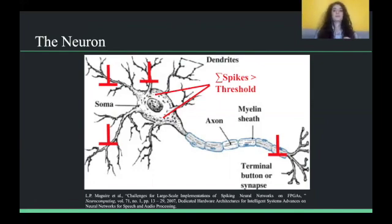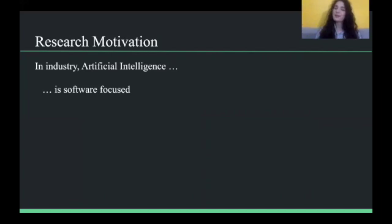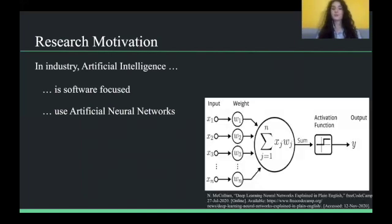So now that we've covered the basics of how this works, let's talk about what is present in industry today and more of what's driving us to do our research. And that requires us to talk about artificial intelligence. So artificial intelligence is very software focused right now in the field. You may have heard the terms machine learning or deep learning, and those are really just algorithms that people are trying to constantly improve. Those algorithms use artificial neural networks, which are different than spiking neural networks.